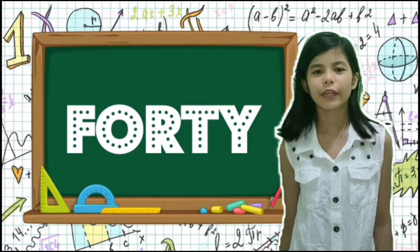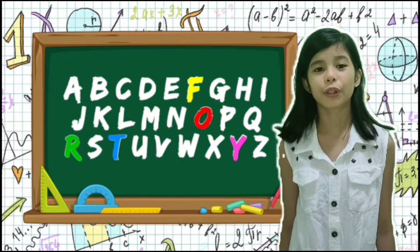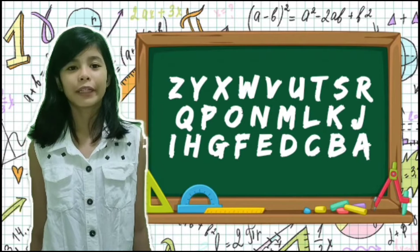40 is the only number to have its letters written in alphabetical order.